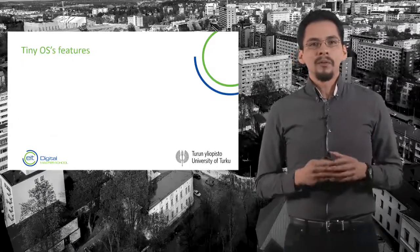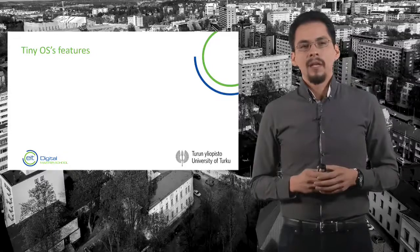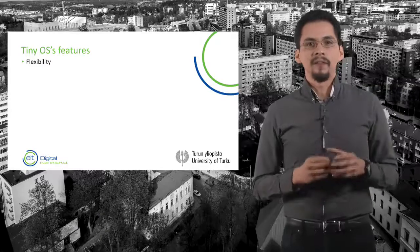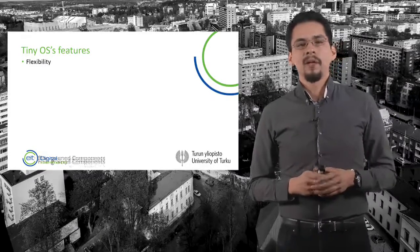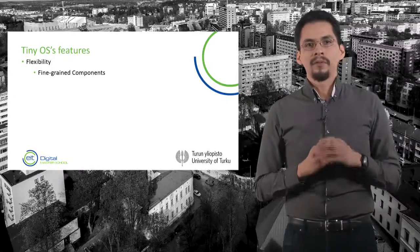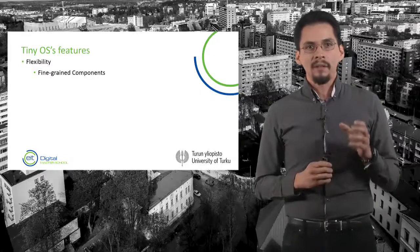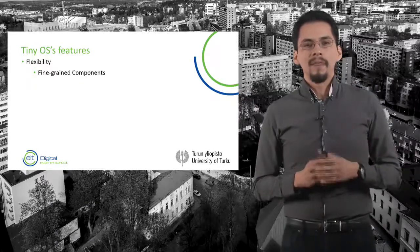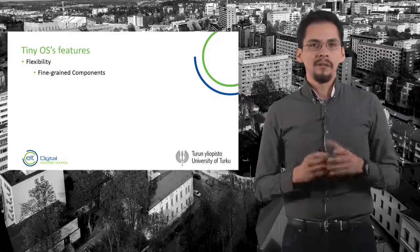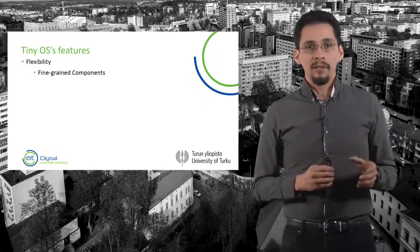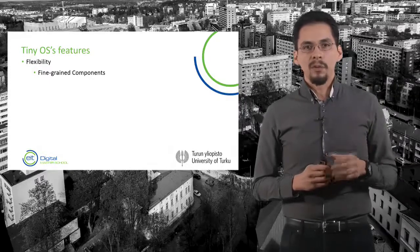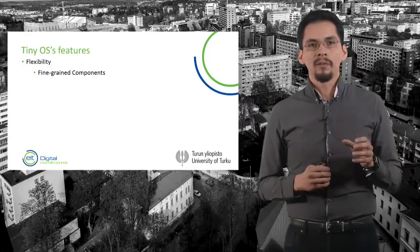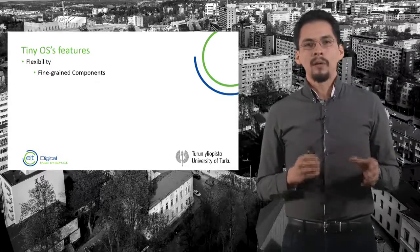Now we continue to discuss TinyOS flexibility. TinyOS supports fine-grained components, implying that a complex application is composed from a large number of very fine-grained components. For example, the main code of TinyOS consists of 401 components. In addition, other 42 applications in the source tree use about 74 components each. A component is built with a small number of modules, and each module is from 7 to around 2000 lines of code.